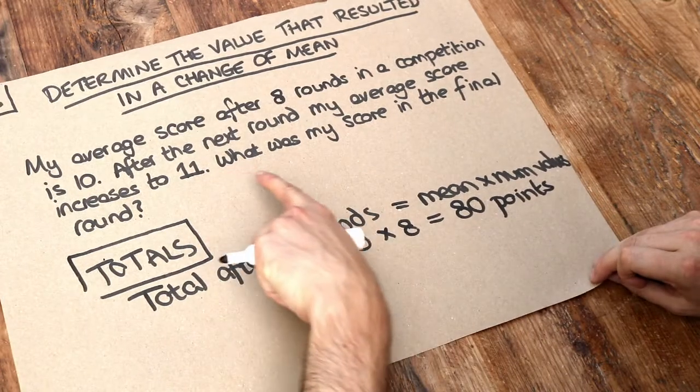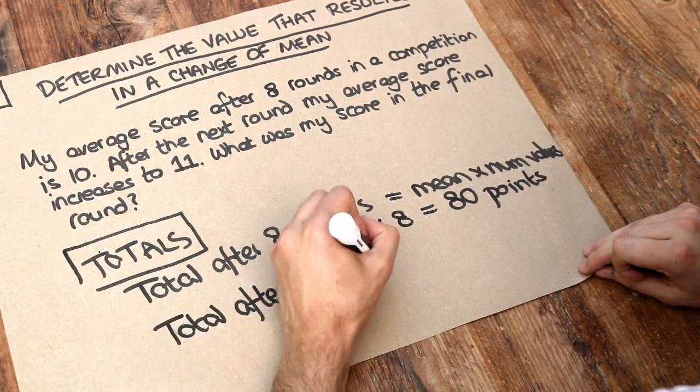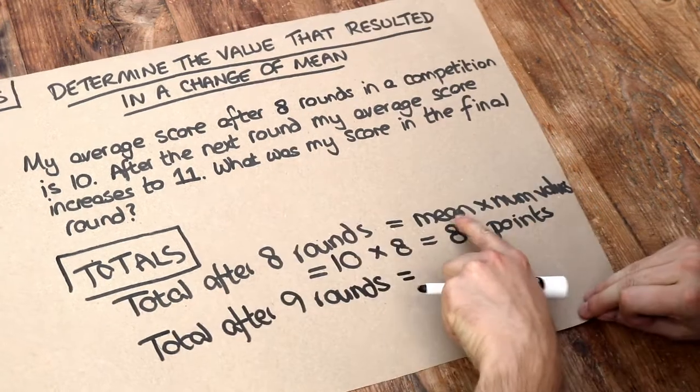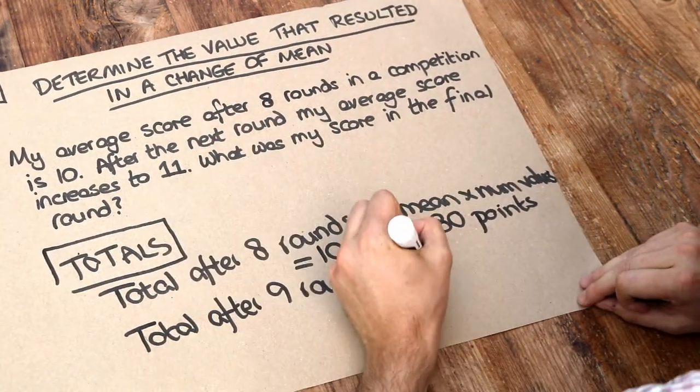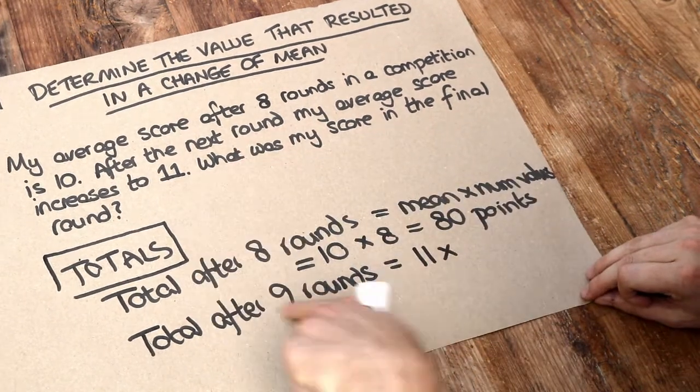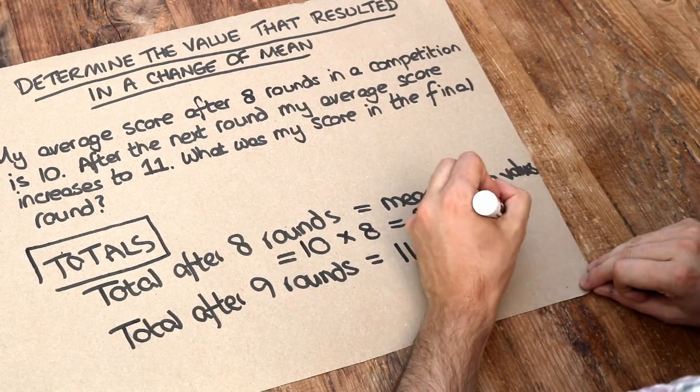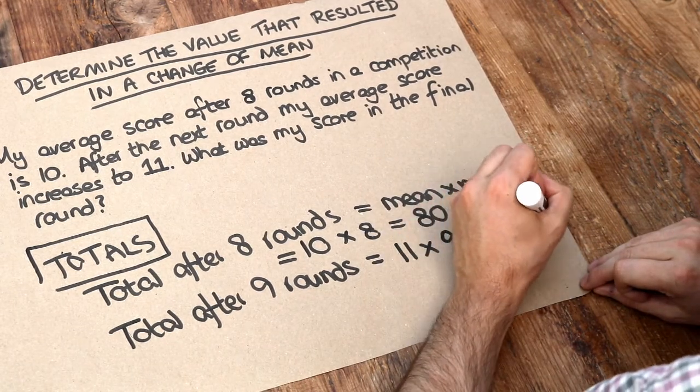Now what about the total after 9 rounds, after we had 1 more round? Again we use the same formula. We do the mean. Well the mean score is now 11, times by the number of values, how many rounds we had. Well we've now had 9 rounds and that means we must have had a total of 99 points after 9 rounds.